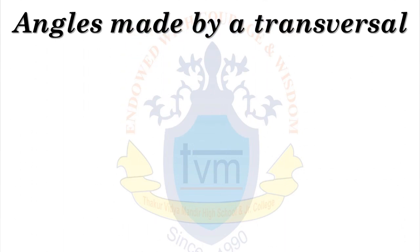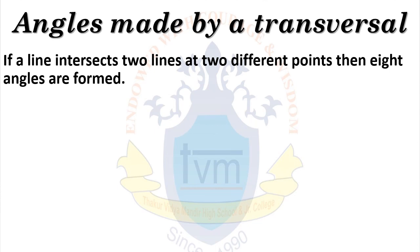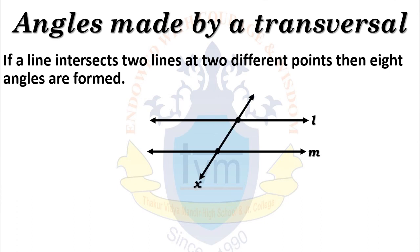Angles made by a transversal. If a line intersects two lines at two different points, then eight angles are formed. Here we have line L and line M, intersected by line X, so line X is a transversal of lines L and M. This transversal forms four angles with each of lines L and M. The angles are: angle A (first), angle B (second), angle C (third), angle D (fourth), angle E (fifth), angle F (sixth), angle G (seventh), and angle H (eighth). So total, we have eight angles in this figure.